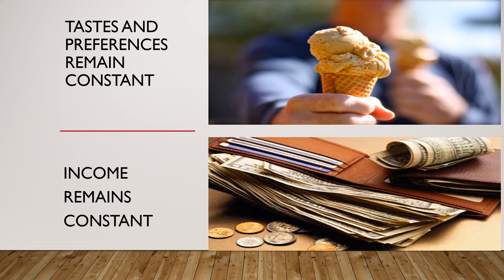The other two assumptions are: tastes and preferences must remain constant. We must not change our tastes and preferences during the period of study — if you are studying strawberry ice creams, you can't suddenly say you want mango or vanilla or chocolate. In this time frame, tastes and preferences must remain constant. The fourth assumption is that income also remains constant — it doesn't change.